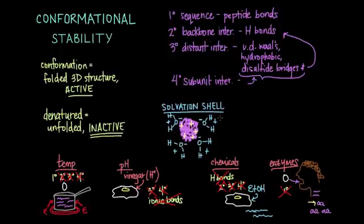So what did we learn? Well, we learned that the conformational stability refers to all the forces that keep a protein properly folded in its active form. This includes all of the different levels of protein structure as well as the solvation shell. We also learned that a protein can be denatured into its inactive form by changing a variety of factors in its environment, including changing the temperature, the pH, adding chemicals or enzymes.